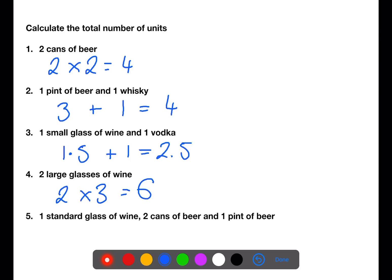And in the last example we have one standard glass of wine which is 2 units, plus two cans of beer each 2 units, plus one pint of beer which is 3 units. This gives a total of 9 units.